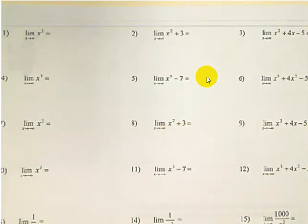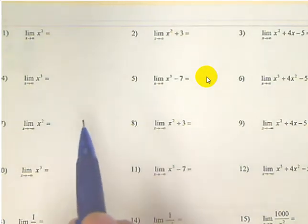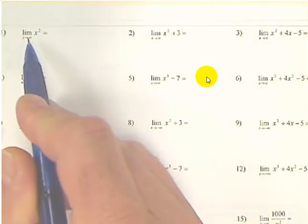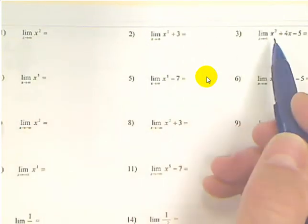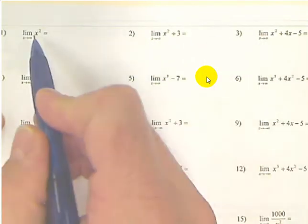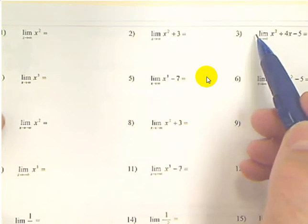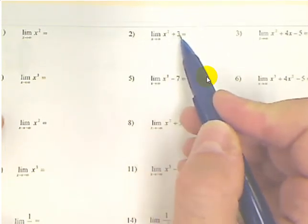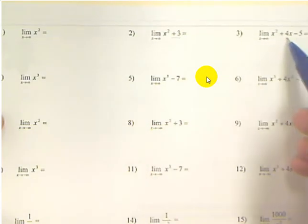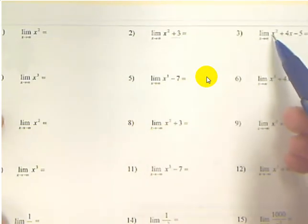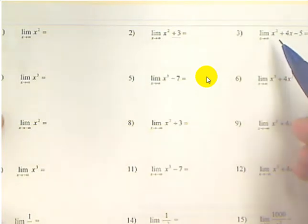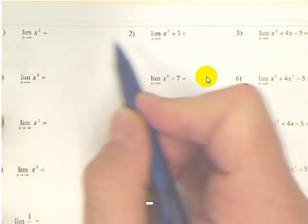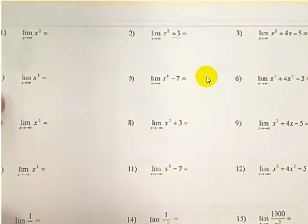We have to picture what's happening on this graph as you go to the right forever or as you go to the left forever. The first three problems are all parabolas — all right-side-up parabolas because it's not negative x squared. This plus 3 on number 2 is just shifting the parabola up 3. This plus 4 and minus 5 cause the parabola to move left or right and up or down, which doesn't change the shape of the graph. Knowing that these are just right-side-up parabolas, we should be able to do the limits for them fairly quickly.